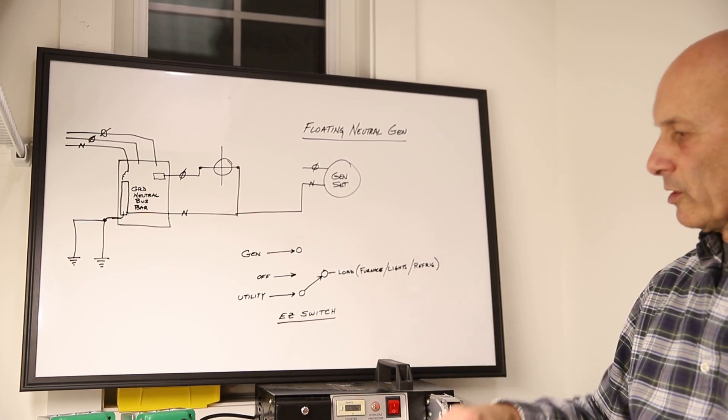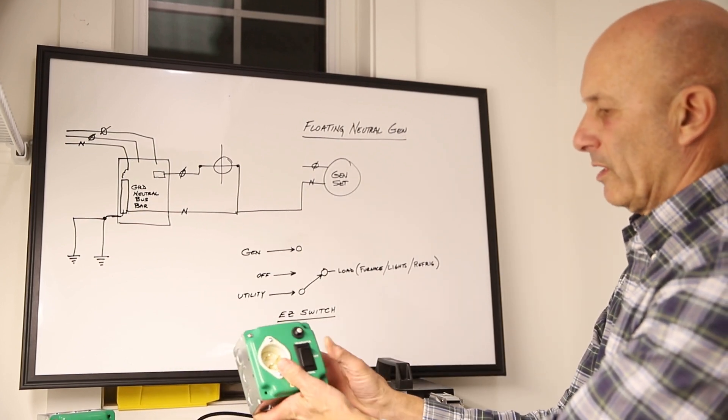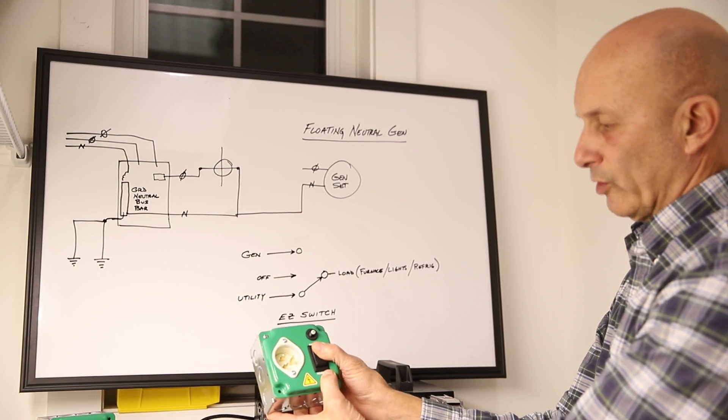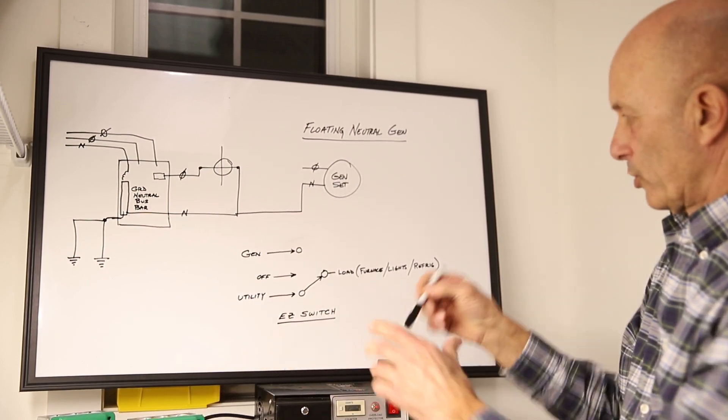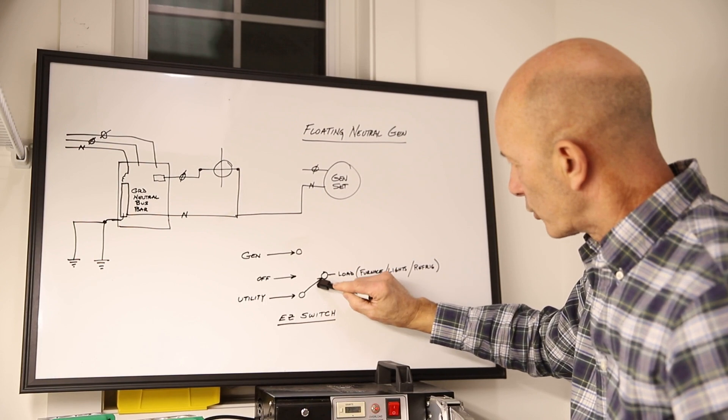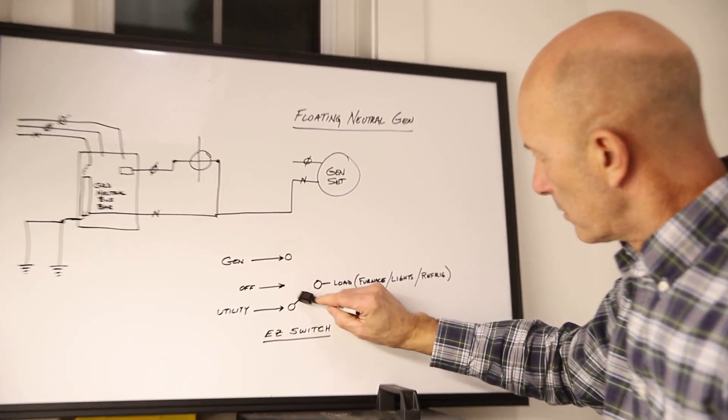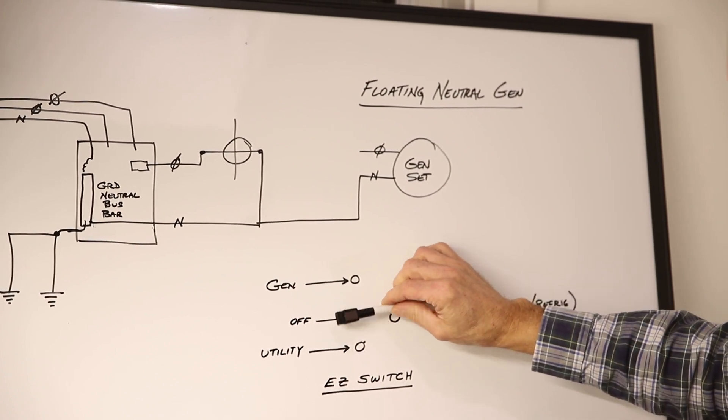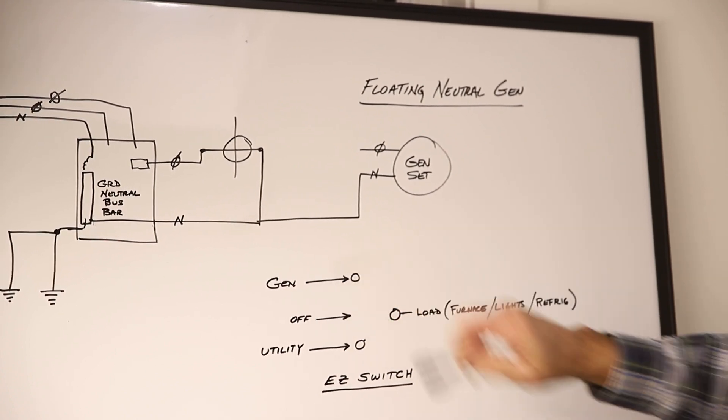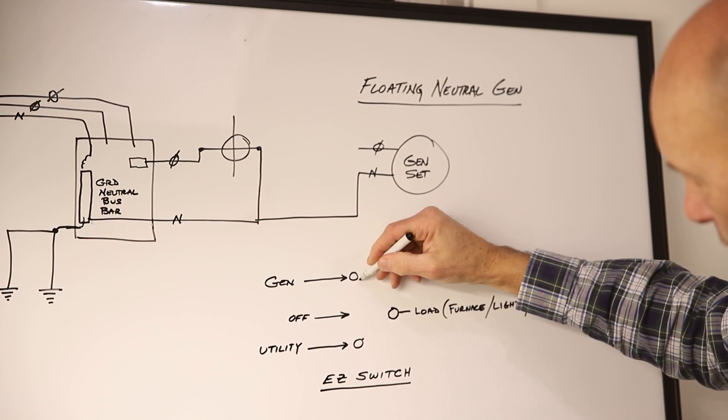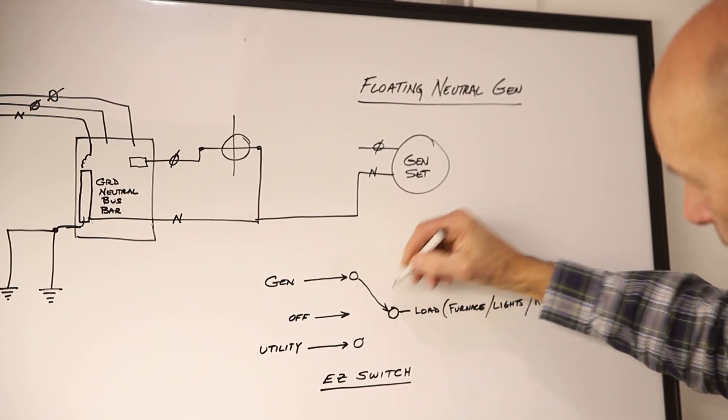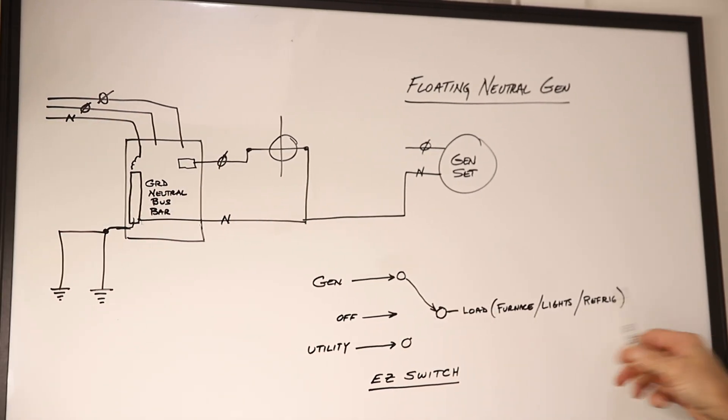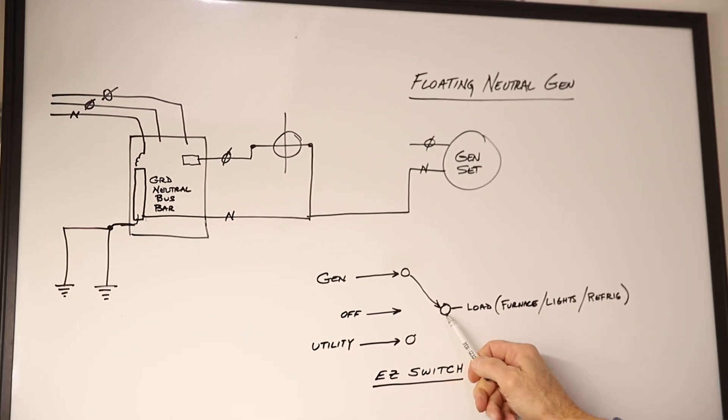When you switch our switch from the normal position from the utility to the generator you go through an off position. So physically our switch does this. Our switch goes from here, goes through the off and then comes up and connects to the generator position. So now your power from your generator is coming in going straight to the load. There is no physical connection here.